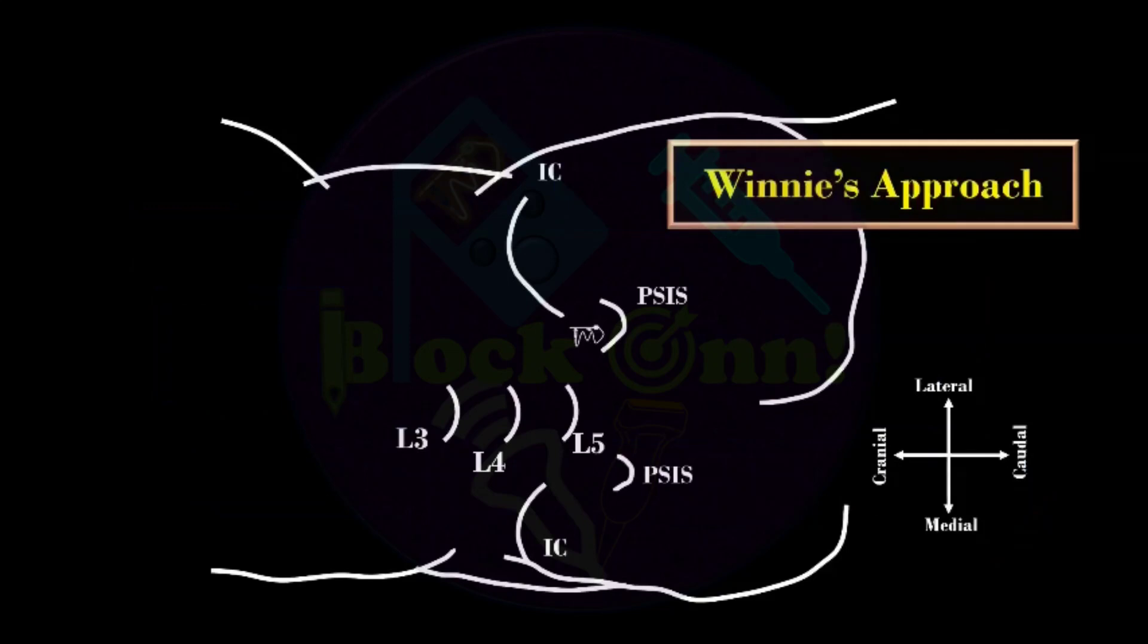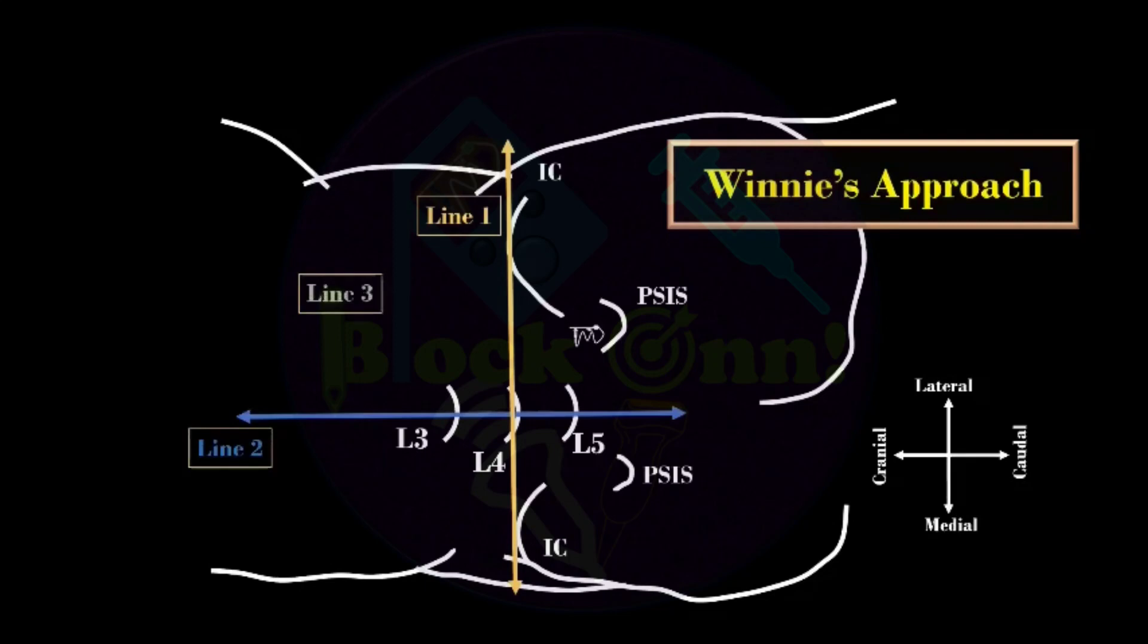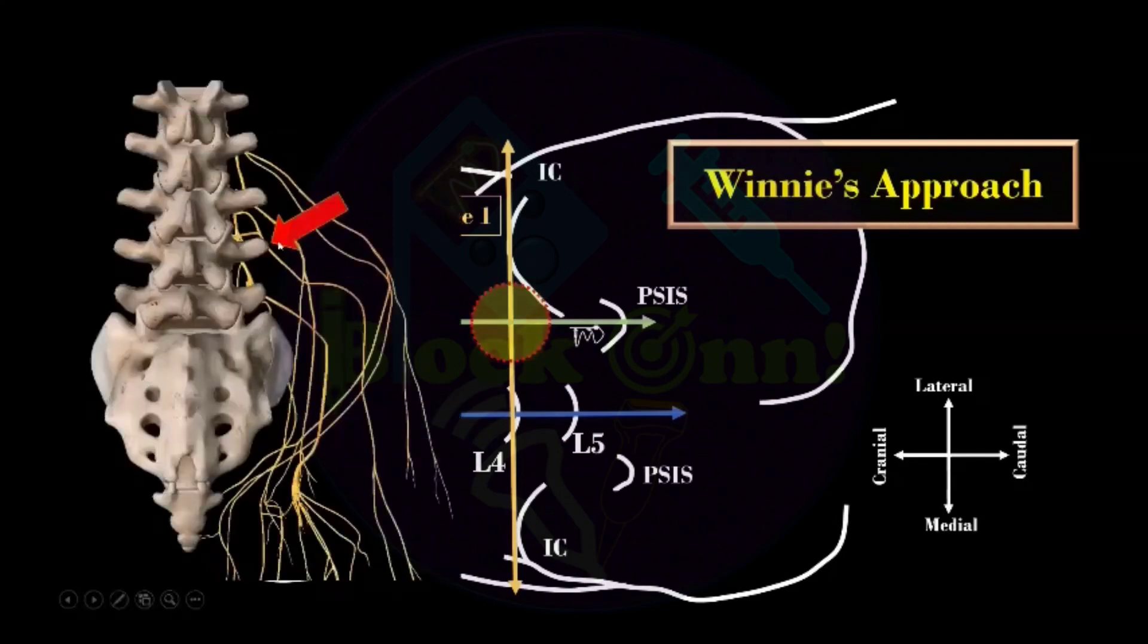I want you all to see this slide very carefully. In Winnie's approach, we need to draw three lines. First line passing through both iliac crests, that is your intercrystal or Tuffier's line, it usually passes through the L4 spinous process or between L4 or L5 intervertebral space. Second line is through L3, L4, L5 spinous process. Line 3 will pass through the posterior superior iliac spine, which is parallel to line 2. This intersecting point of line 1 and line 3 will be the needle entry point for Winnie's approach. The problem with this approach was it is too lateral. Lumbar plexus components are medial to this point, so you might miss the lumbar plexus. If you advance, you can injure abdominal viscera.